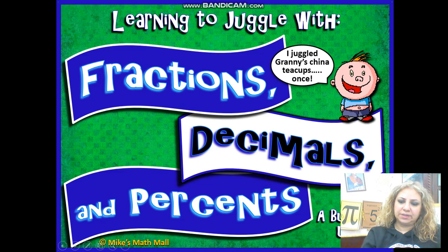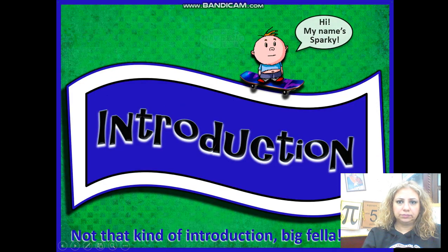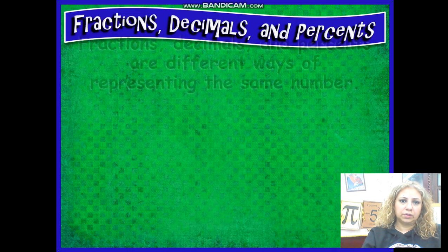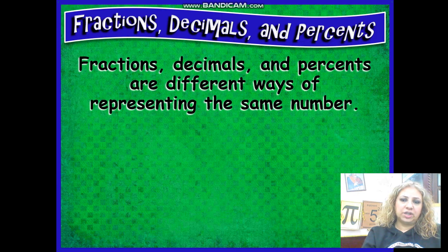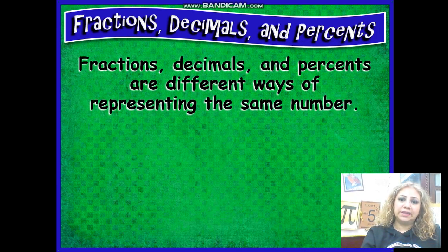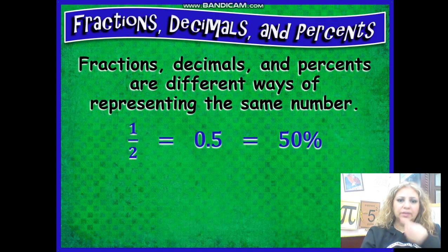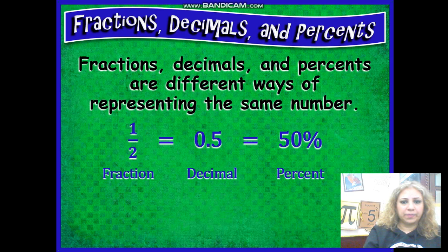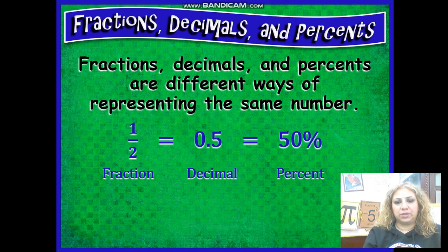Fractions, decimals and percents are different ways of representing the same number. I can represent half as a fraction, as a decimal 0.5, and 50% as a percent. So I can show my number using three different ways: fraction, decimal and percent. These numbers look different but they all have the same exact value.